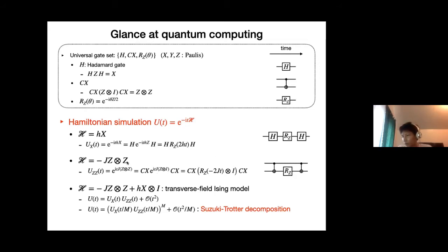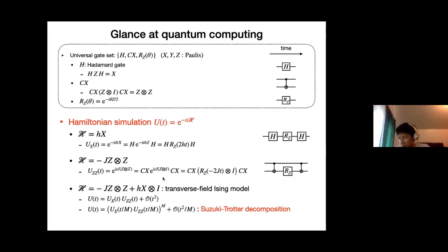For a more interesting example: the Ising Hamiltonian with coupling J and Z⊗Z acting on two qubits. To apply exp(−itJ·Z⊗Z), we use the identity that CNOT·(I⊗Z)·CNOT = Z⊗Z, decomposing the operation into a CNOT, followed by RZ acting on the first qubit, followed by CNOT. This gives the circuit representation of the Ising coupling evolution.